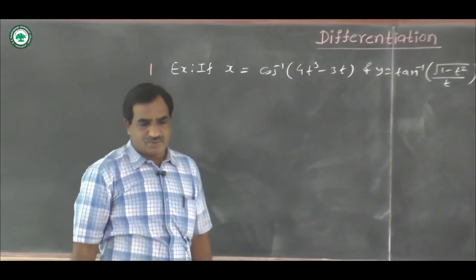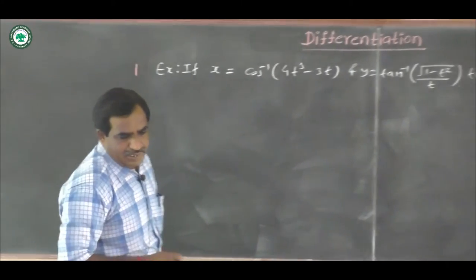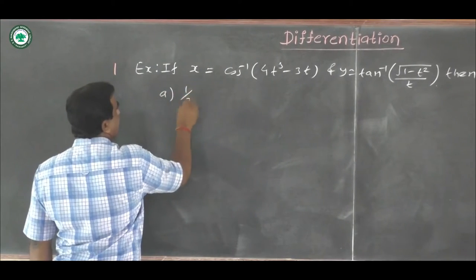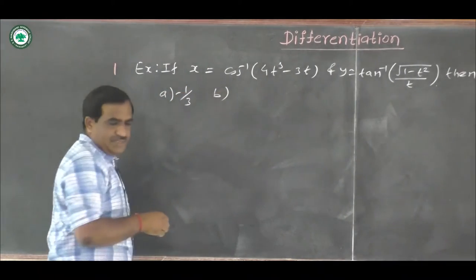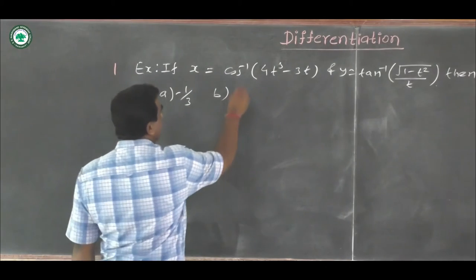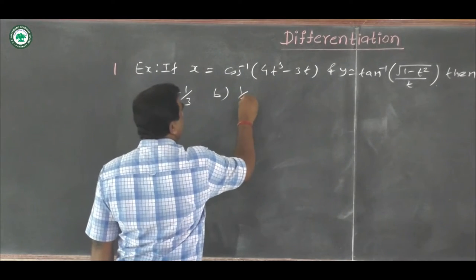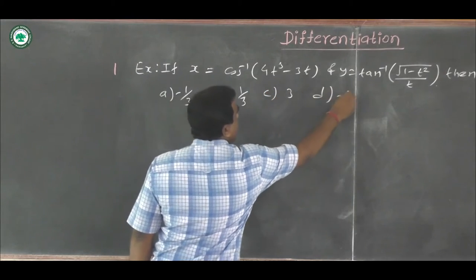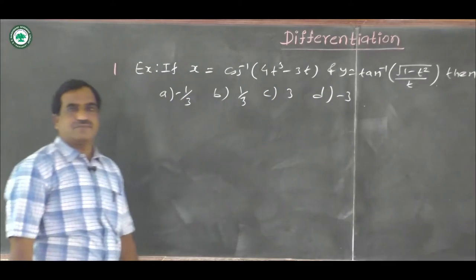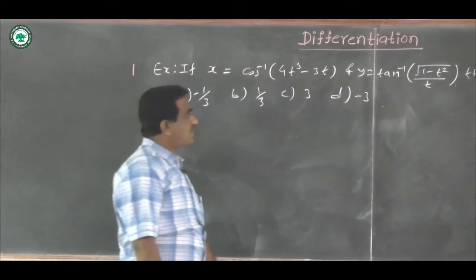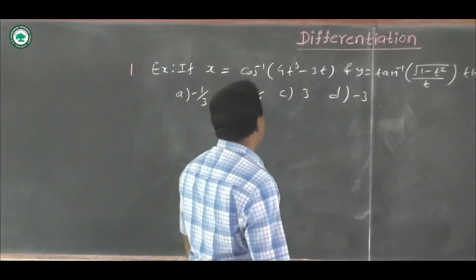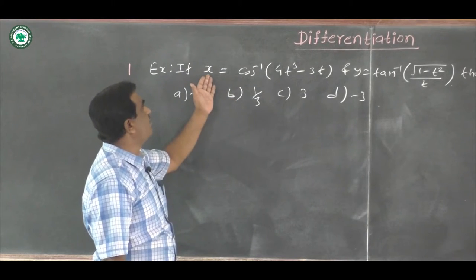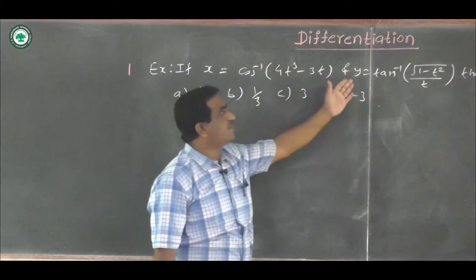The options are: option a is minus 1 by 3, option b is 1 by 3, option c is 3, and option d is minus 3. We have to find the correct option. We will use the parametric rule, but first we find the derivative for x and y with respect to t.